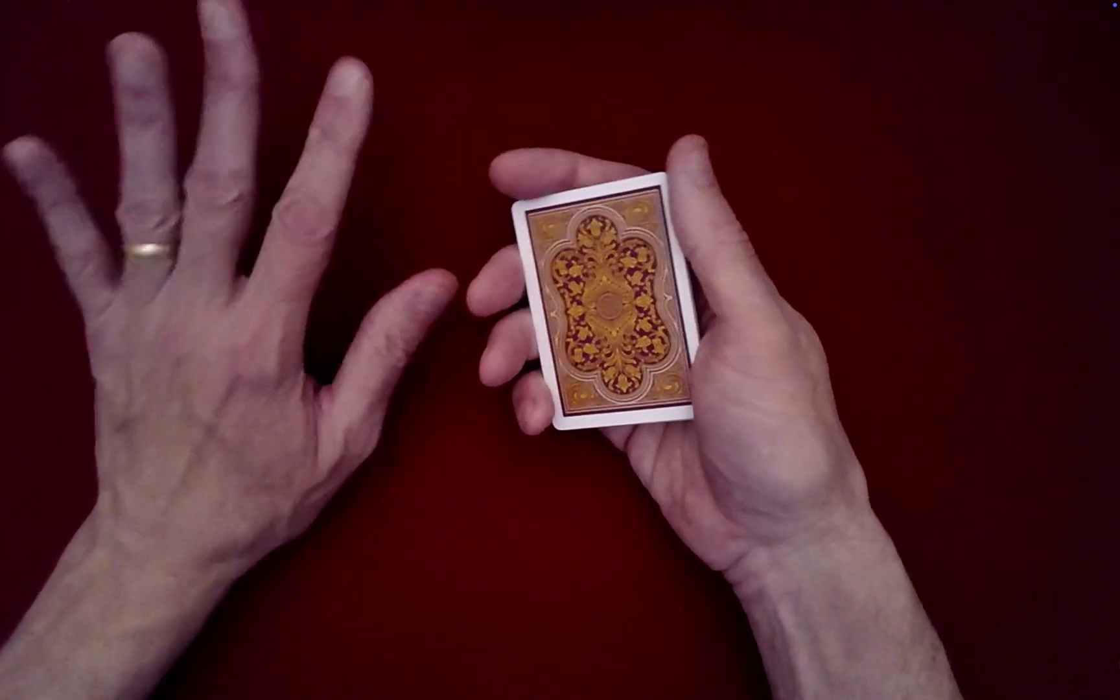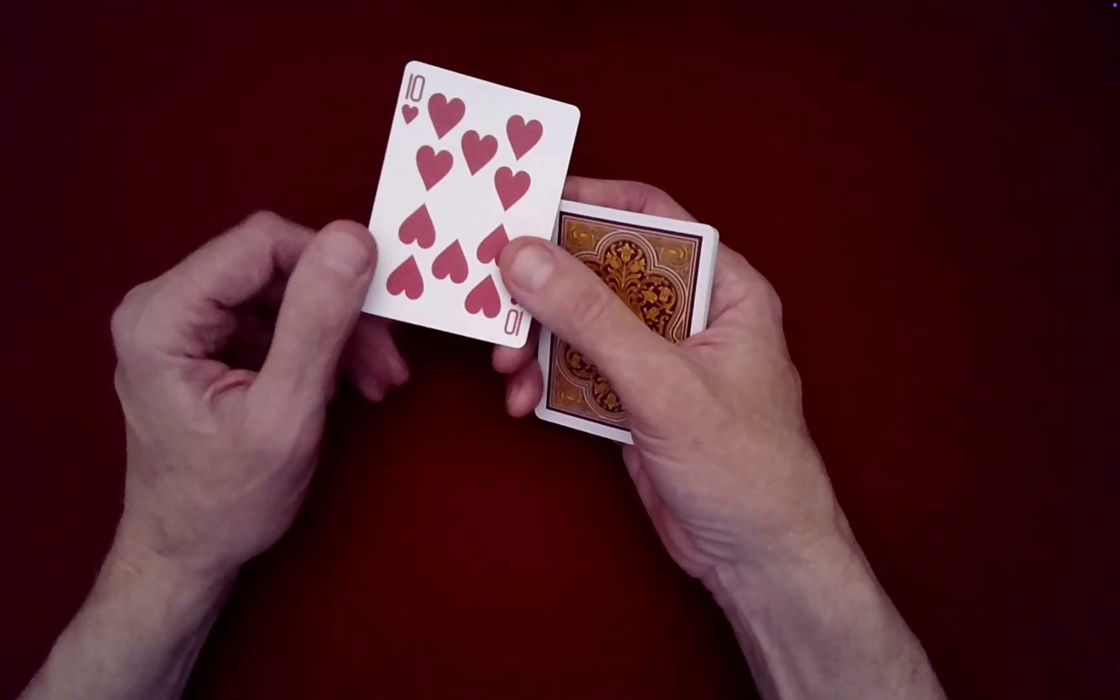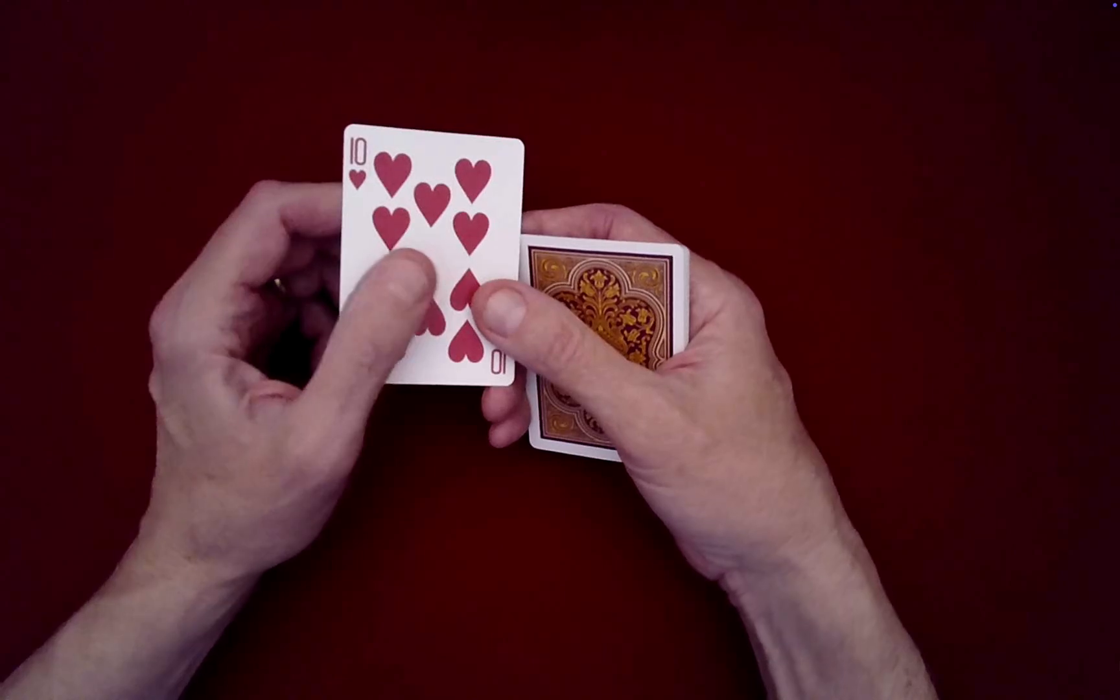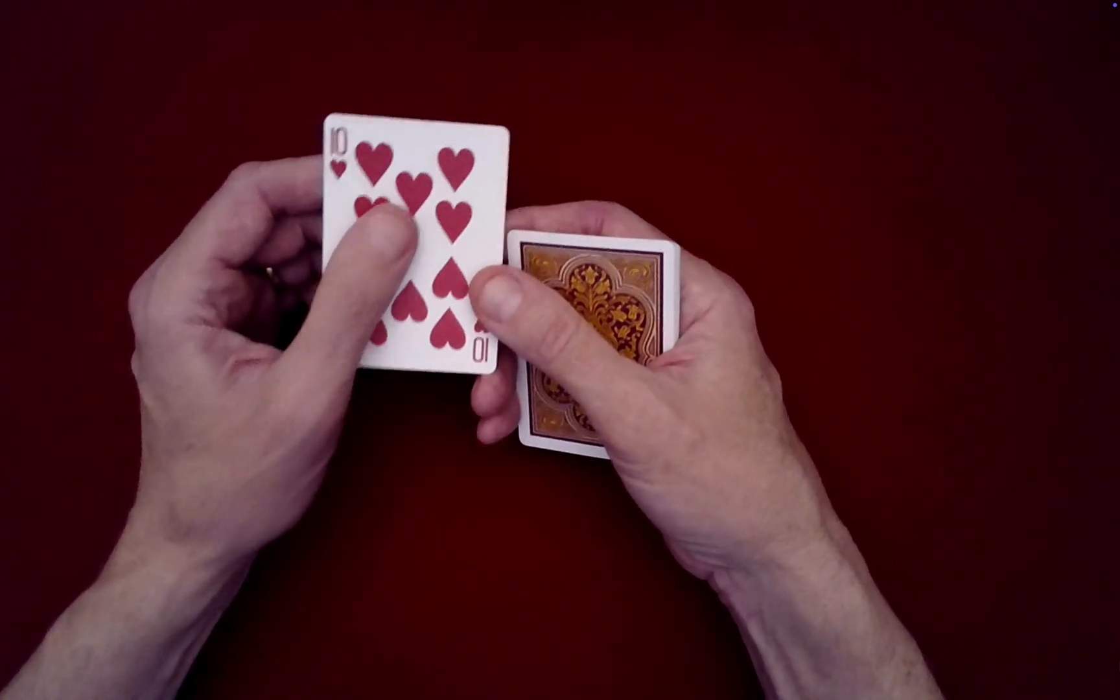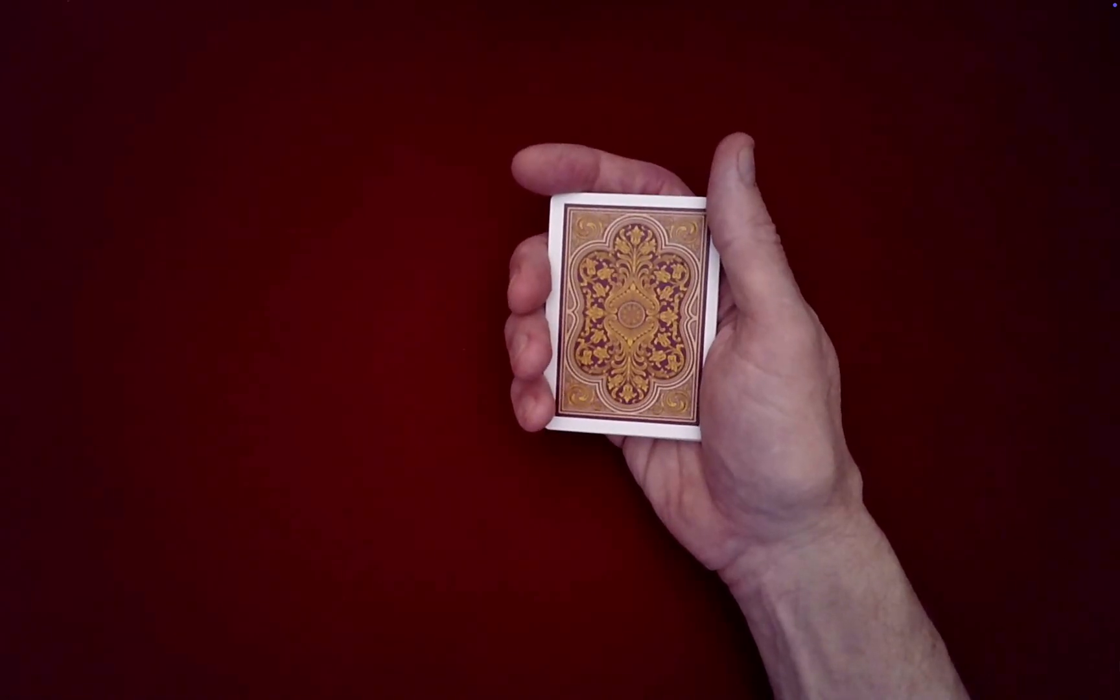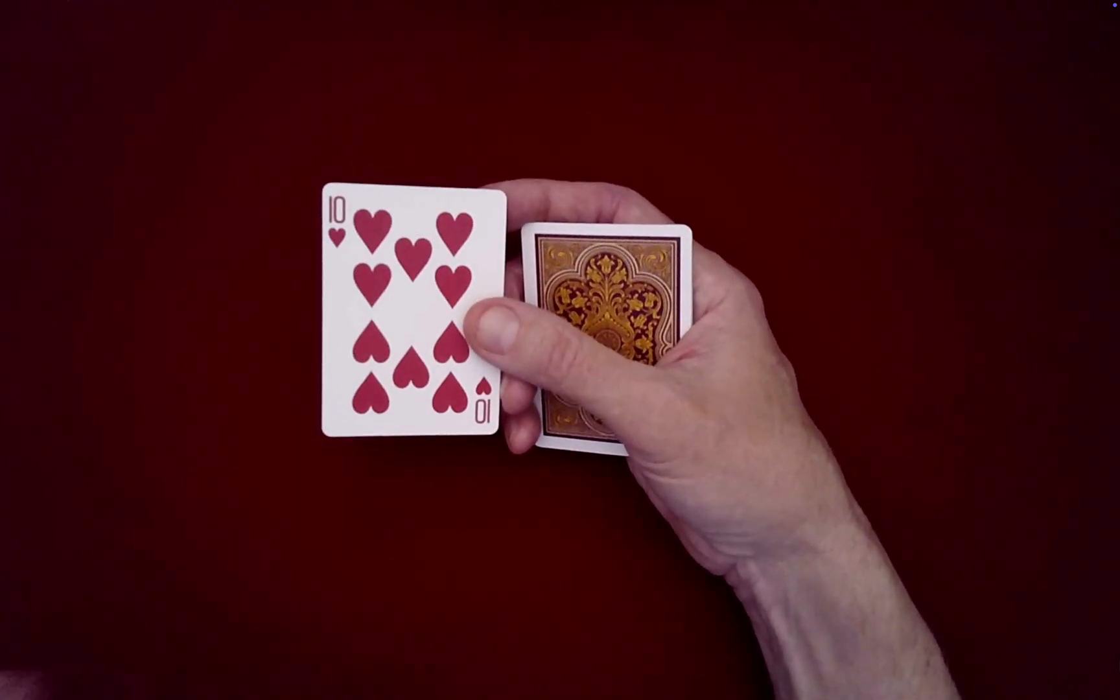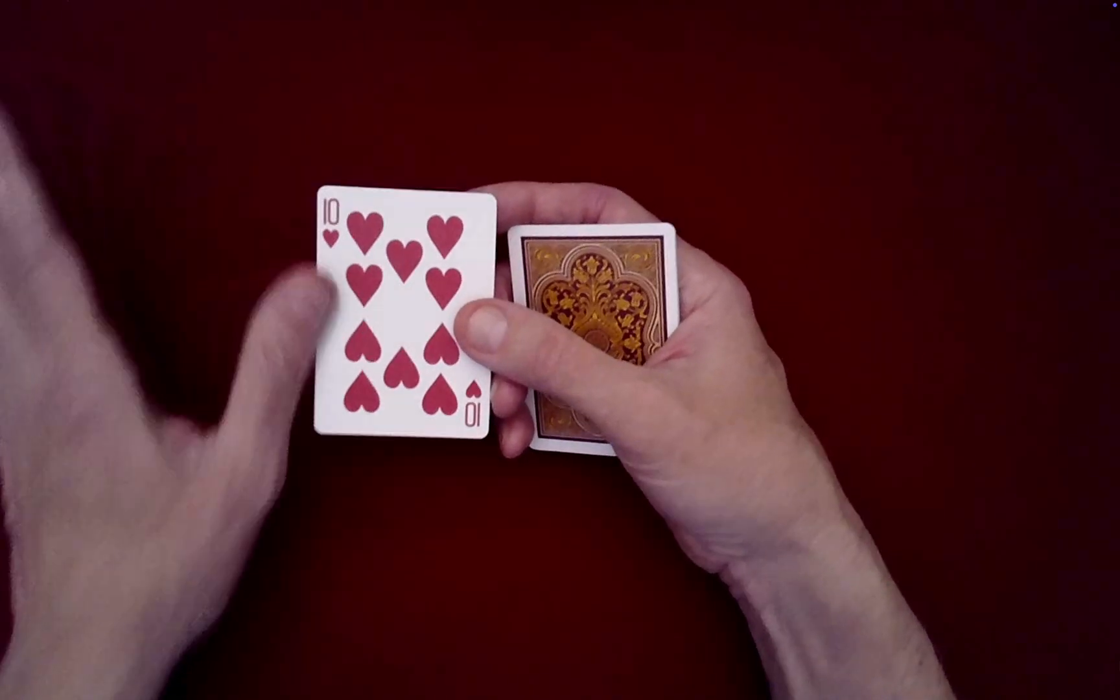Now the kicker involves having the 10 of hearts behind your back, you know, where you can readily get it. So the idea is that this is behind your back, and then you'll add it to the packet in just a moment, which is going to be quite a surprise to the spectator.